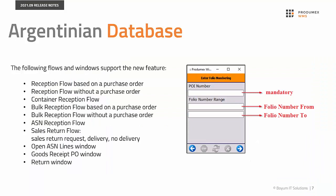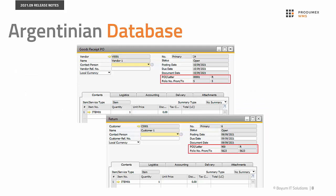PradoMax WMS supports the POI field and the folio number from and the folio number to fields if the SAP Country Database is set to Argentina. On the mobile client, a new Enter folio numbering screen has been added to the given flows and the POI field is mandatory to be filled in in order to create the necessary documents. In the Open ASN lines window of PradoMax menu, the three extra columns are editable. You can fill in the columns, save the data and create Good Receipt PO documents. On the created documents, the system fills in the extra fields.